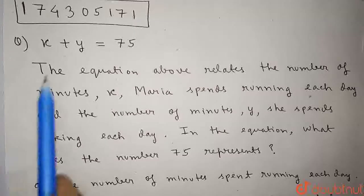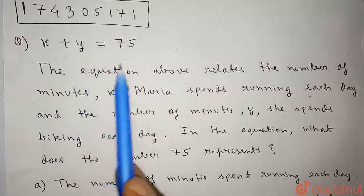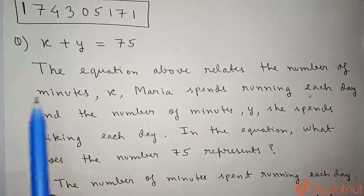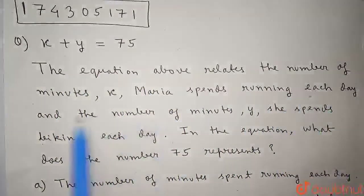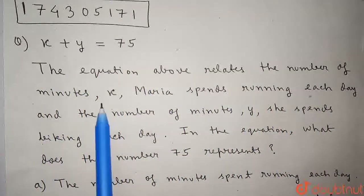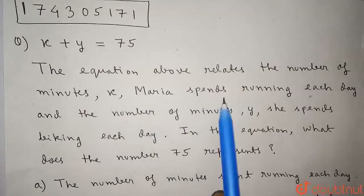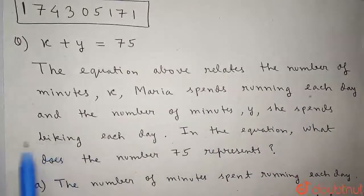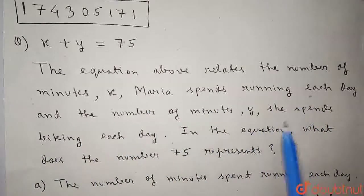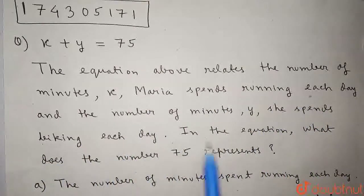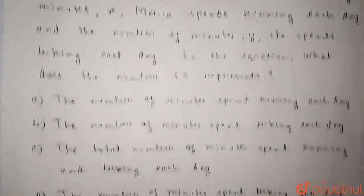In this problem it is asked: x plus y equals to 75. The equation above relates the number of minutes x Maria spends running each day and the number of minutes y she spends biking each day. In the equation, what does the number 75 represent?